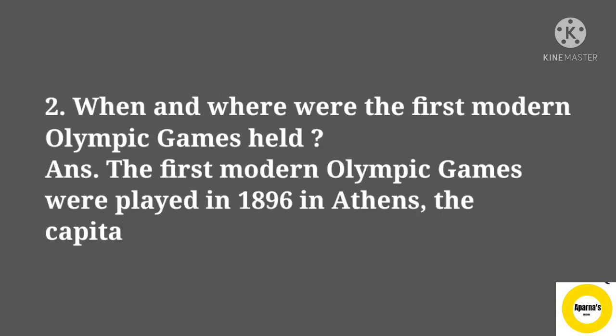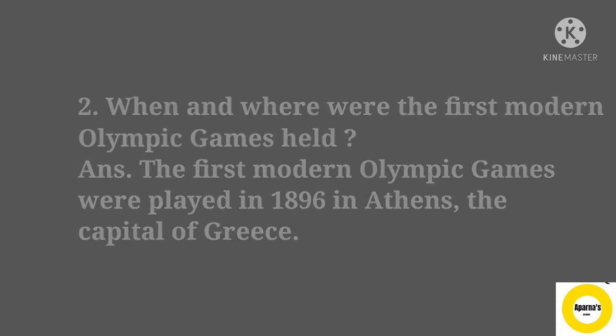Question number 2: When and where were the first modern Olympic Games held? Answer: The first modern Olympic Games were played in 1896 in Athens, the capital of Greece.